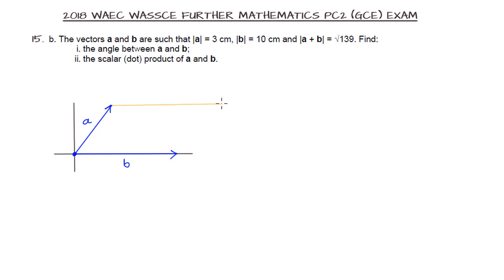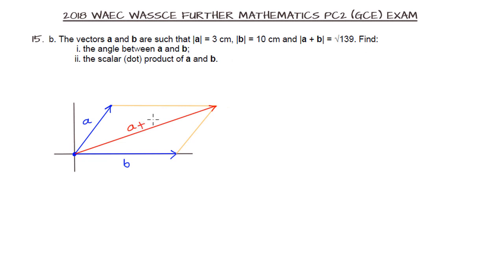If we draw a line parallel to vector b and parallel to vector a, the vector a plus b — which is the resultant vector — is going to be the diagonal. So this is vector a plus b. We are asked to find the angle between vectors a and b, which has been shown in green.